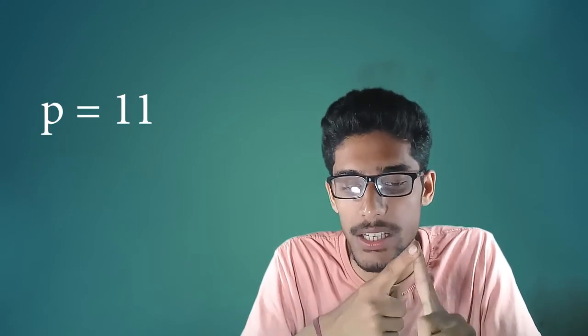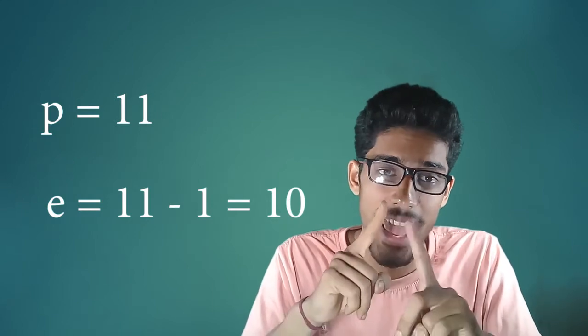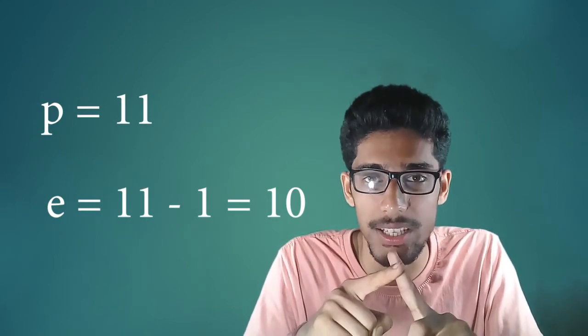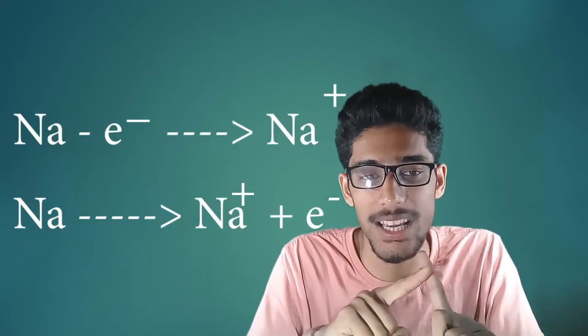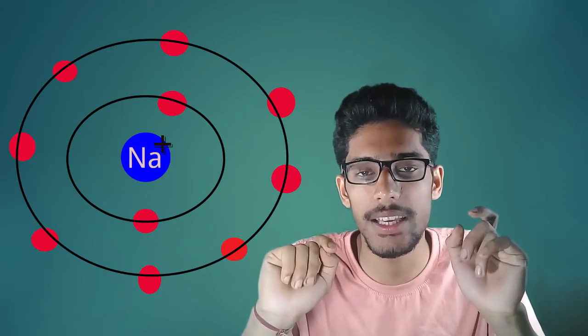Remember, sodium loses electrons. So sodium becomes Na-positive. The sodium loses its 1 outermost electron, so the configuration becomes 2, 8. The electron is not the same — if we have an electron, then the electron is not the same — but the electronic configuration becomes the same. So sodium is represented as Na-positive. This is Na-positive.